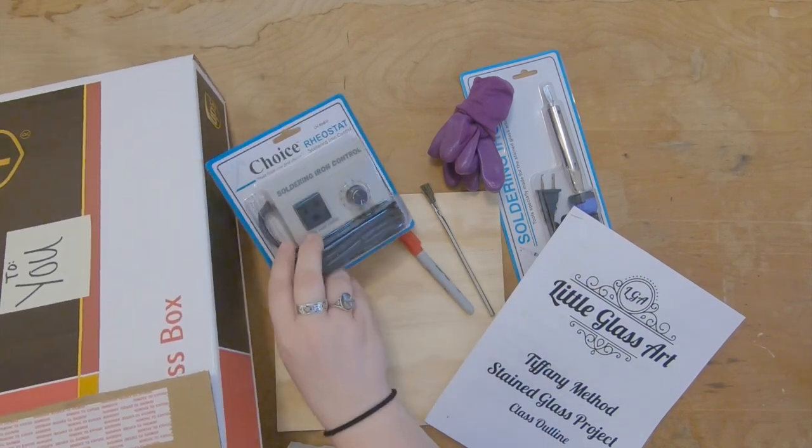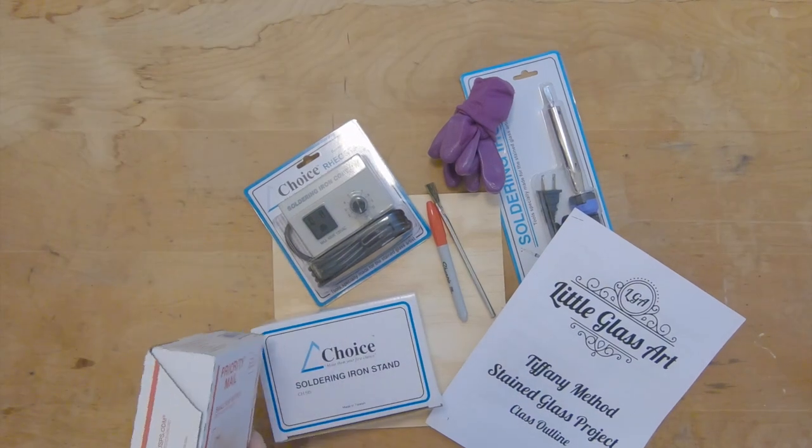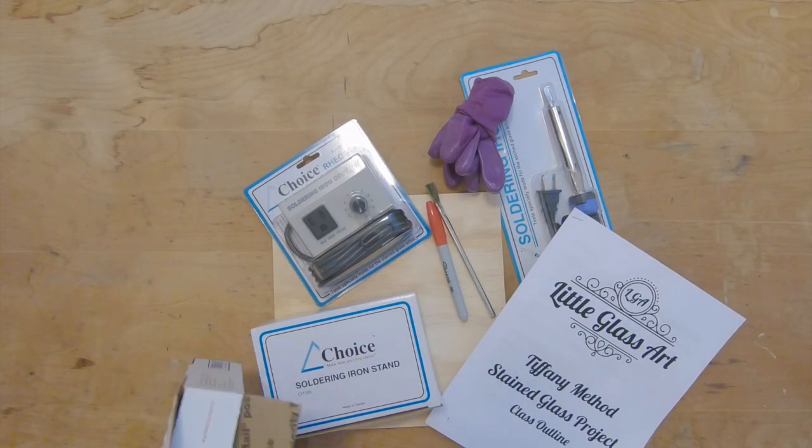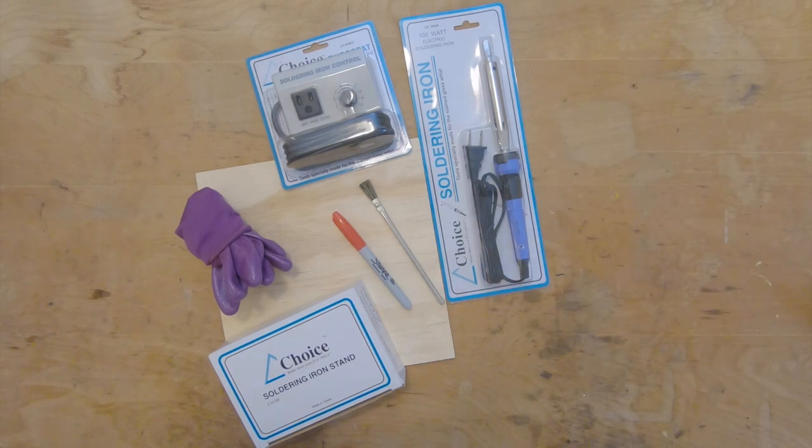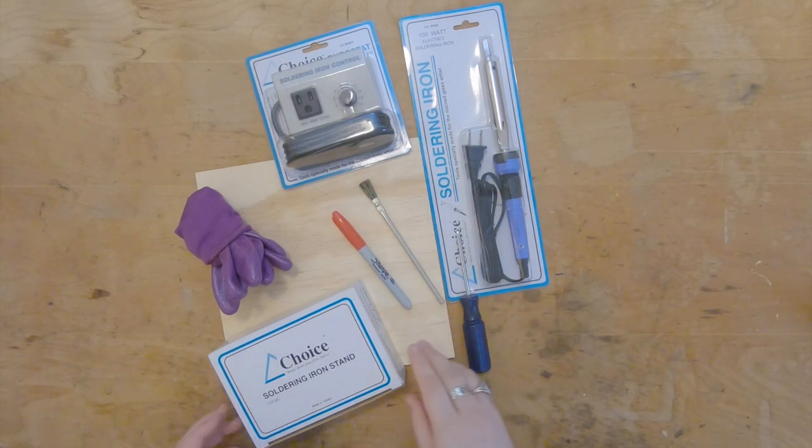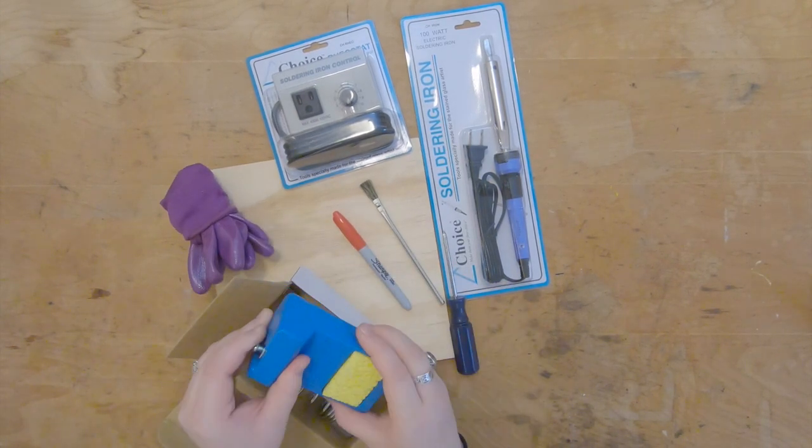A sharpie, rheostat for our iron, and our soldering iron stand. In the design kit we have all the consumables. Here's everything included in the basic toolkit. You will need a screwdriver to put your iron stand together. This comes with a sponge that you'll use during soldering.